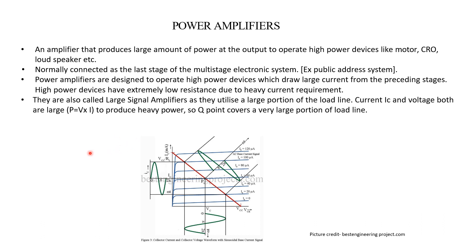Power amplifiers. We know that an amplifier is a device which increases a particular quantity. For example, the voltage amplifier. In the case of a voltage amplifier, if we apply a small amount of voltage at the input, the voltage amplifier will enhance its level and at the output we will get a large amount of voltage. This is the overall definition of a voltage amplifier.